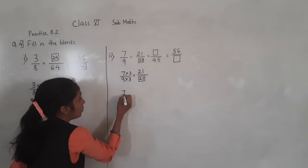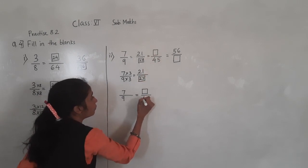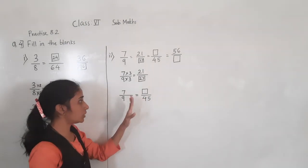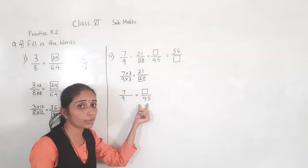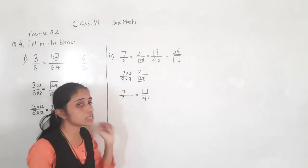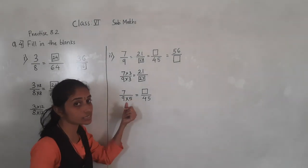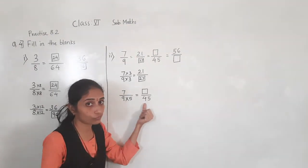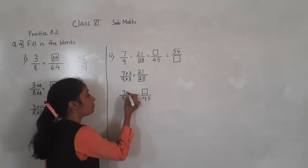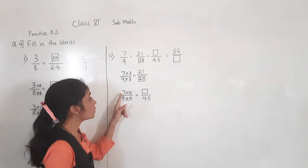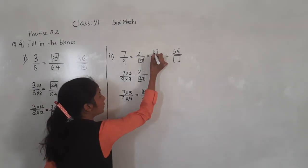For the denominator also I will multiply by 3 to get the equivalent fraction. So 9 threes are 27 — so here we get 27. Now let's take the next: 7 upon 9 is equal to blank box upon 45. So 9 fives are 45 — if I multiply by 5 for 9, I get 45. So I multiply by 5 for the numerator also, and 7 fives are 35. So 35 will come here.